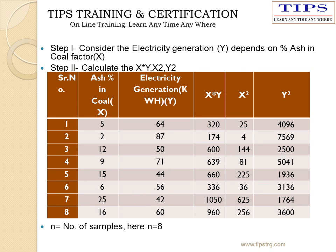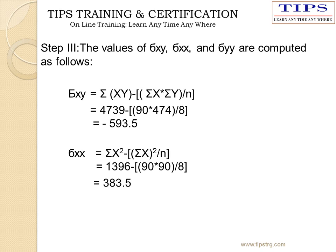How to calculate this correlation: Step 1, consider the data for electricity generation and percentage ash in coal. Step 2, calculate the values of x times y, x squared, and y squared. Here the number of samples is 8. Step 3, by putting the values in the formula for sigma xy, sigma xx, and sigma yy respectively, we will get sigma xy as minus 593.5 and sigma xx as 383.5.